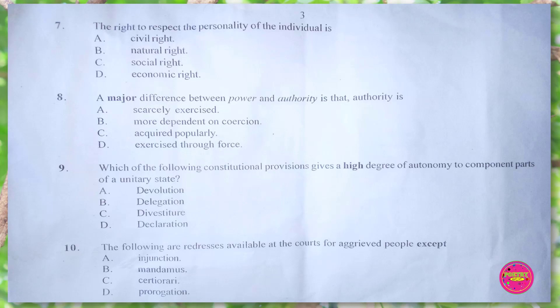Question 8. A major difference between power and authority is that authority is: A. scarcely exercised, B. more dependent on coercion, C. acquired properly, D. exercised through force. The correct answer is C. acquired properly.